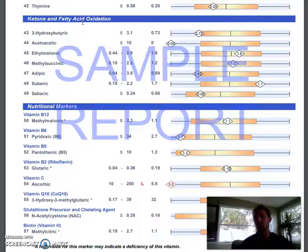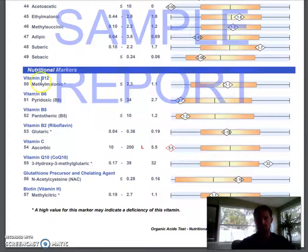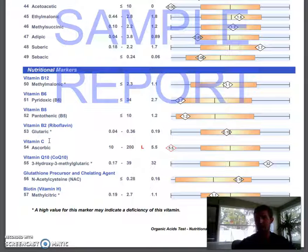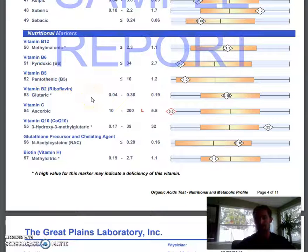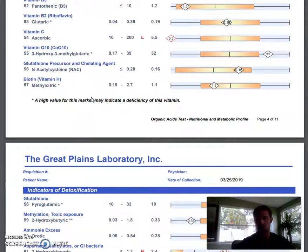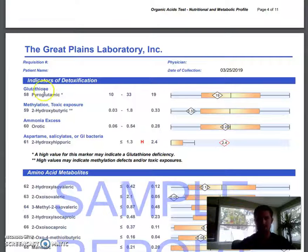We also have ketone and fatty acid oxidation — as far as your omega-3s and what kind of good fats you're getting in your system and their ratios. We have nutritional markers: your B vitamins, vitamin C, CoQ10, glutathione, vitamin H, things like that — it helps identify any deficiencies. This is much more accurate than blood work; these come up as deficient oftentimes when blood work says it's normal.